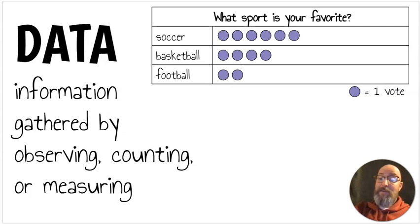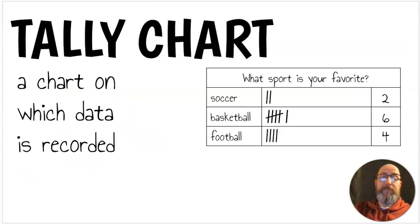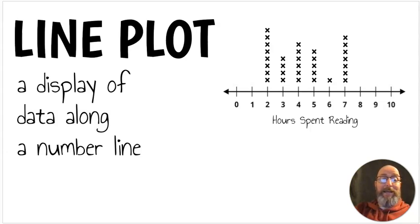Data. Sometimes said data. It's information gathered by observing, counting, or measuring. So if we asked a question, and we asked people what their favorite sport is, the information we find out is data. A tally chart is a chart on which data is recorded, and it has these tally marks on it. So a tally chart is a chart on which data is recorded. A line plot is a display of data along a number line. So I have a number line. I may ask a question, how many hours did you spend reading over the break? And you would tell me, and we would track how many people. So on this one, I have one, two, three, four people read for three hours. One person read for six. Another person, one, two, three, four, five, six, seven, eight people read for two hours. So a line plot is a display of data along a number line.